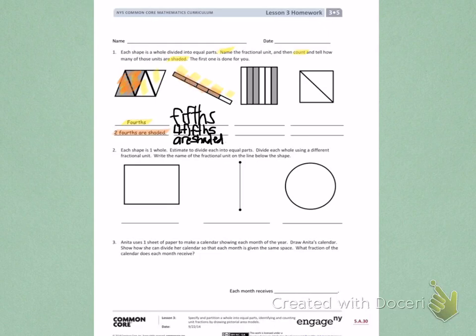The third picture, I see 1, 2, 3, 4, 5, 6 fractional parts. When there are 6 fractional parts, I call them sixths.